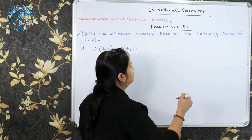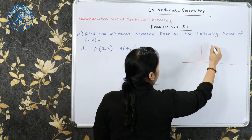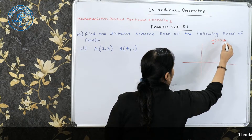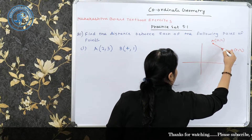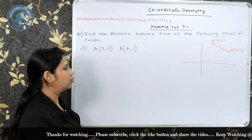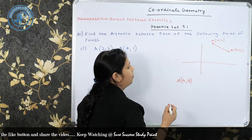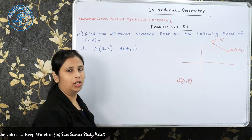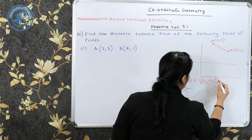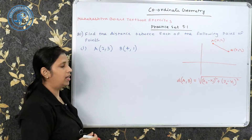To calculate the distance between two points, suppose I have two points in my x-y plane: this is (x1, y1) and this is (x2, y2). I have to calculate the distance between them using the distance formula. The distance formula gives us: √[(x2 − x1)² + (y2 − y1)²], where x1, y1, x2, y2 are the coordinates of points A and B.